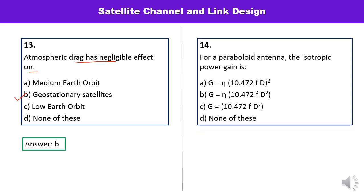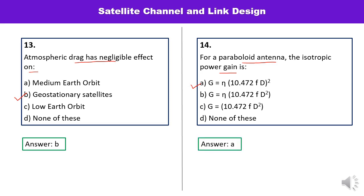Question number 14: for a parabolic antenna, the isotropic power gain is given by G = η·(10.472·F·D)². This equation is used many times, so finding the correct option is straightforward. Let us check — yes, this is the correct one.